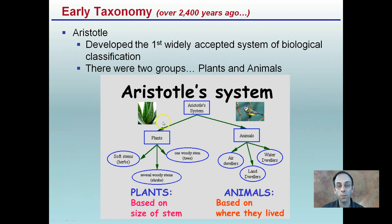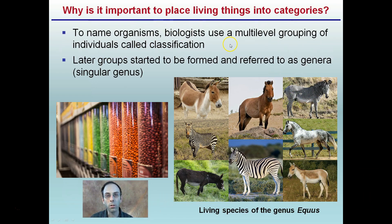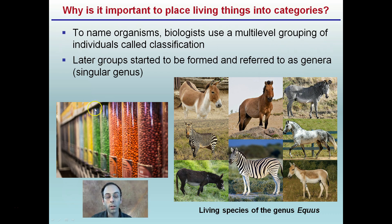To name organisms, biologists use a multi-level grouping of individuals called classification. It's important to place things into categories because it allows us to better organize organisms and see which ones might be more closely related for comparative purposes. By organizing them into distinctive groups, we can draw conclusions, find information, and look for solutions across related subspecies.